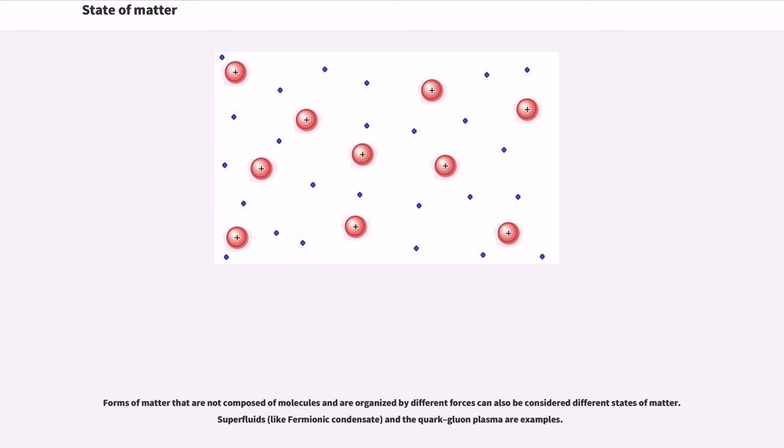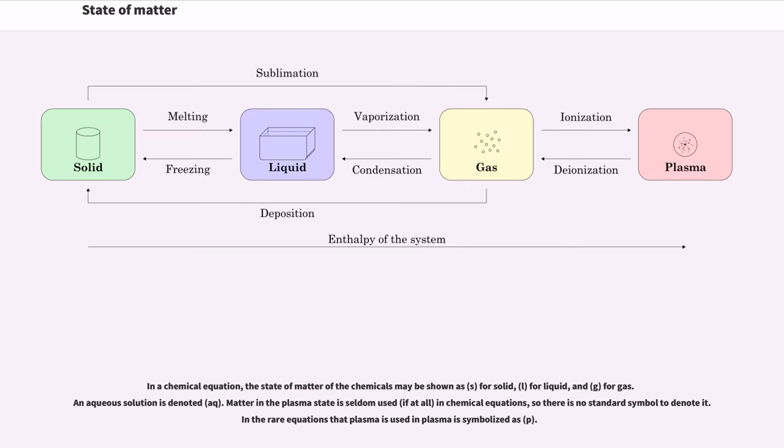In a chemical equation, the state of matter of the chemicals may be shown as S for solid, L for liquid, and G for gas. An aqueous solution is denoted Aq. Matter in the plasma state is seldom used, if at all, in chemical equations, so there is no standard symbol to denote it. In the rare equations that plasma is used in, plasma is symbolized as P.